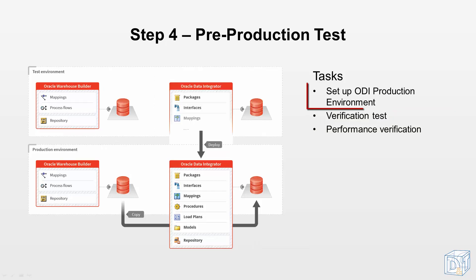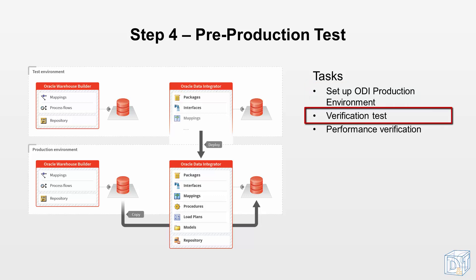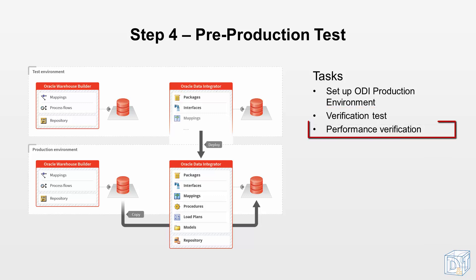During the pre-production step, we set up a parallel pre-production environment to ensure the correctness of the new ODI project in the production environment — for example, to verify the configuration, the privileges, missing patches, etc. If required, some fine-tuning of the new ODI project performance can still be done at this stage.